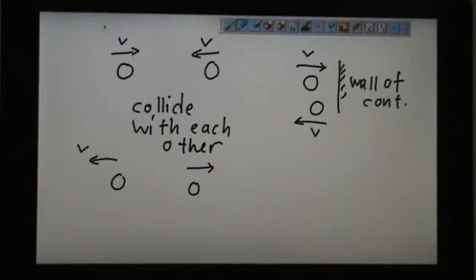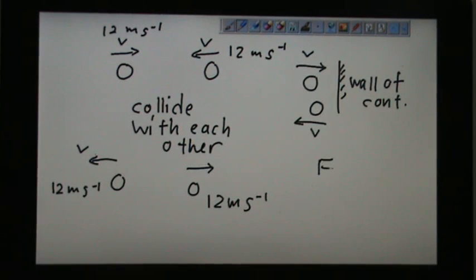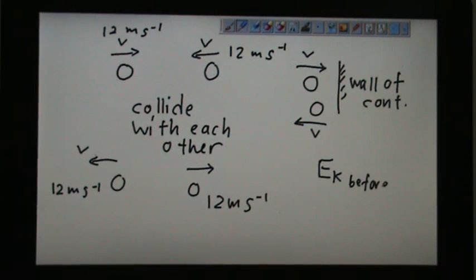Example, if they move to each other with 12 meters per second, after colliding with each other, the speed will be the same. There's no slowing down of the speed. From this explanation, we also can say that the kinetic energy before is the same as the kinetic energy after.